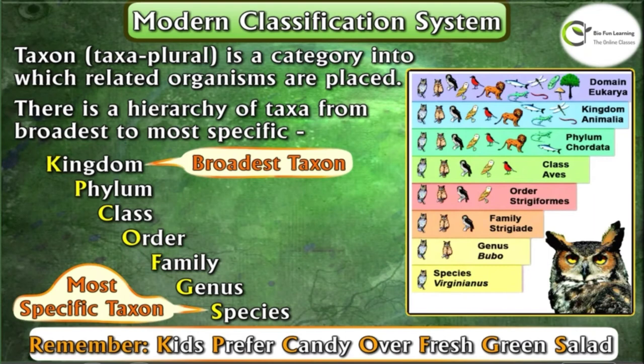Note: genus is always placed before species. Kingdom is the largest unit of classification and contains the largest number of organisms. It is divided into smaller units called phyla. Each phylum is divided into classes. Each class is divided into orders. Each order into families. Each family into genera. And each genus into species. The number of organisms in each unit decreases from kingdom to species.